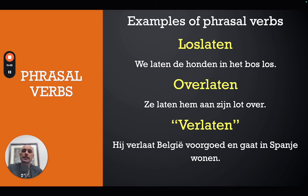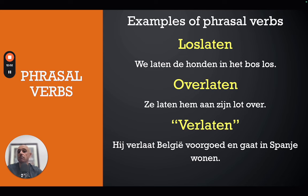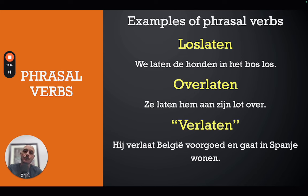'Loslaten' means 'to let loose' or 'to let go.' For example, 'we laten de honden in het bos los' — 'we let the dogs loose in the forest.' Same pattern: 'laten' is the main verb up front, and 'los' — the preposition — goes all the way to the end. That's how separable verbs are conjugated.